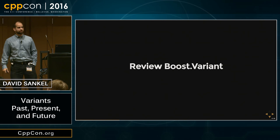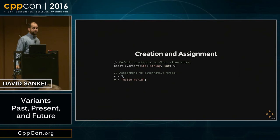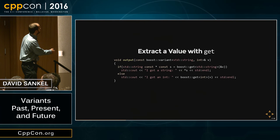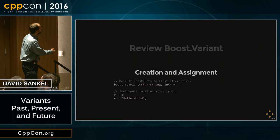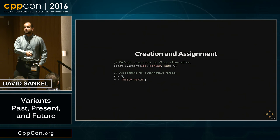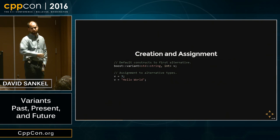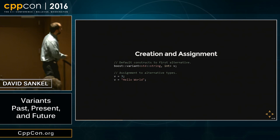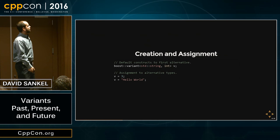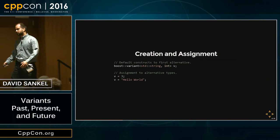Boost variant has been around for a long time. The default constructor initializes to the first alternative — so if the first alternative is string, which has a default constructor, the variant initializes to an empty string. For assignment, you say v equals 3, and it realizes it needs to switch to holding an int. Or v equals "hello world", and it will realize that needs to be a string and do the right thing. That's how you change the value of a variant.